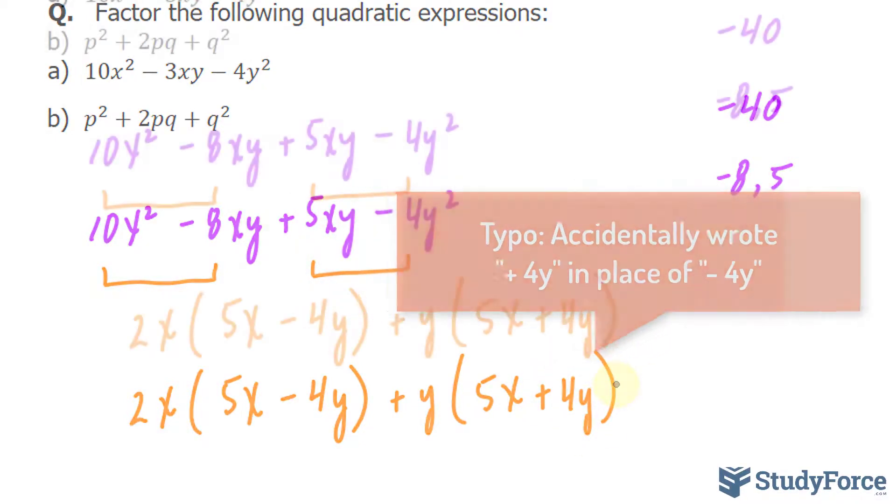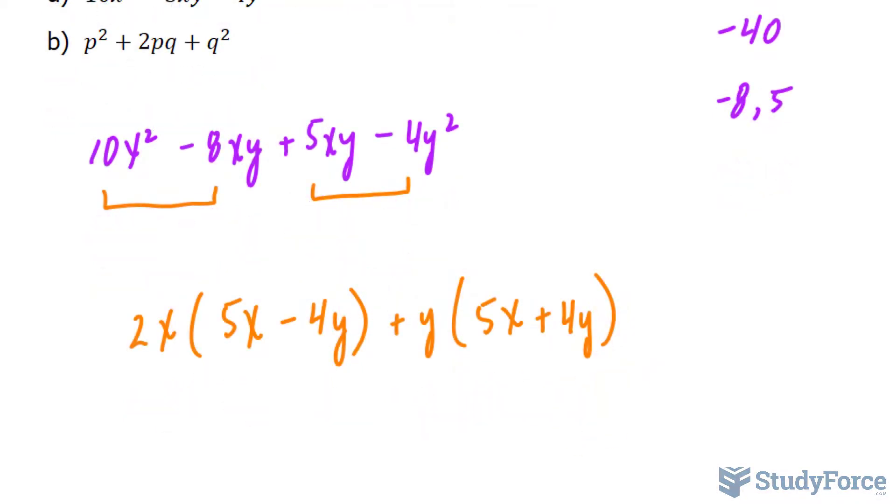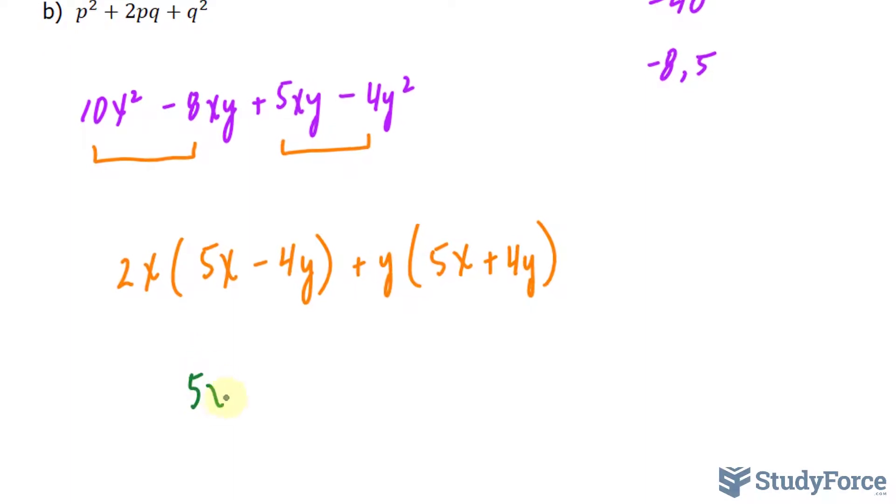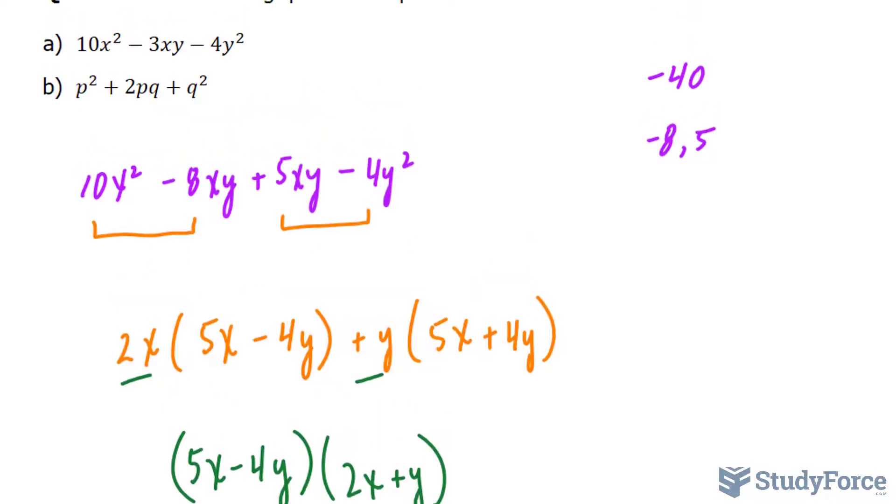The last step is to common factor this expression. Both of these terms have 5x - 4y in common. So I'll pull out 5x - 4y and make sure you leave these terms in their parentheses. And what remains is 2x + y. And that's the answer to the very first question.